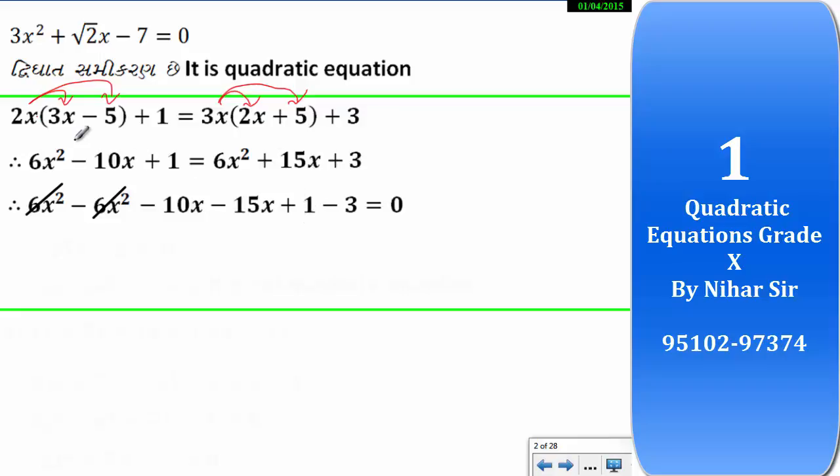Everything equal to zero on this side. Now, if you take everything equal to zero to this side, the answer will be the same. It doesn't matter. Now, minus 10 minus 15 what will happen? Minus 25 or minus minus plus. Plus 1 minus 3. 3 minus 1 is 2. Bigger number sign minus 2. So, this is not a quadratic equation.